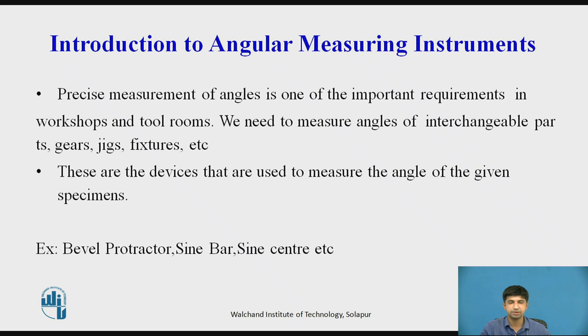Examples of angular measuring instruments include the Vernier Bevel Protector, Sine Bar, Sine Center, Angle Gauges, Clinometer, and Protector. These are the various examples of angular measuring instruments.